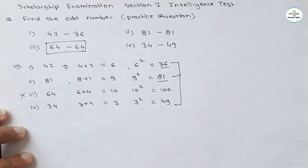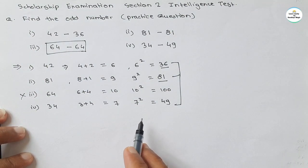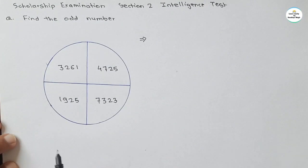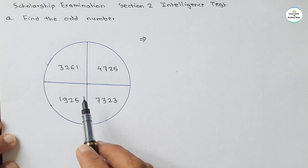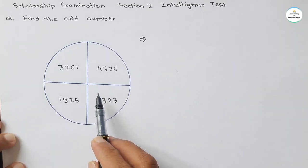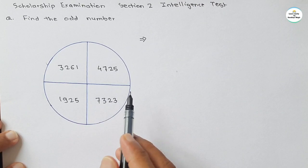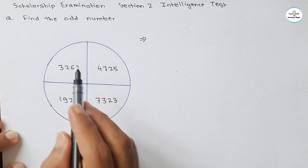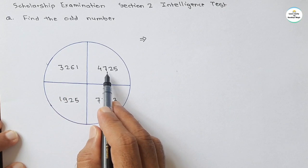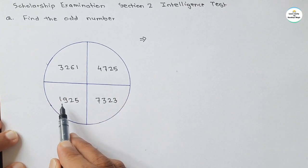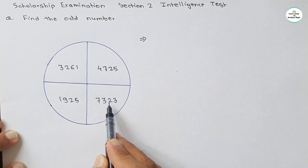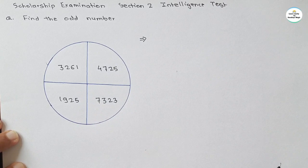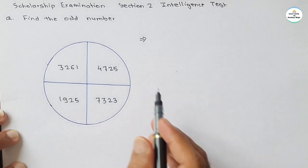Now let's see the original question of this video. We have to find the odd number. There are four numbers: three two six one (3261), four seven two five (4725), one nine two five (1925), and seven three two three (7323). Let's start our solution.